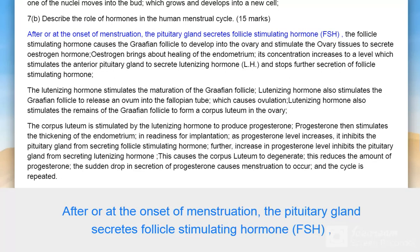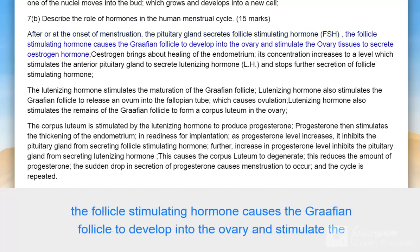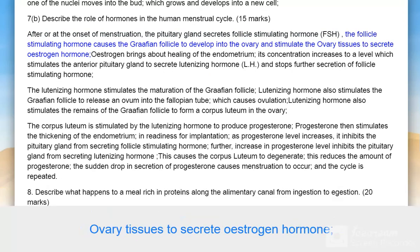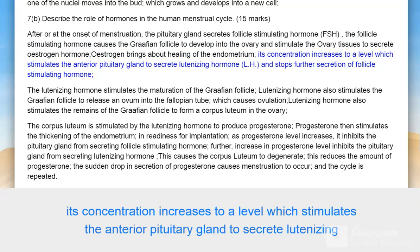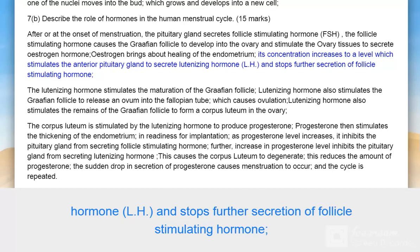At the onset of menstruation, the pituitary gland secretes follicle stimulating hormone (FSH). FSH causes the Graafian follicle to develop in the ovary and stimulates the ovary tissues to secrete estrogen. Estrogen brings about healing of the endometrium. Its concentration increases to a level which stimulates the anterior pituitary gland to secrete luteinizing hormone (LH), and stops further secretion of FSH.